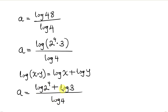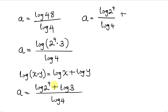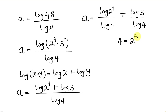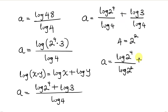Now our next step will be to split the fraction. So a becomes log 2 to the 4th divided by log 4, plus log 3 divided by log 4. Now we know that 4 is the same as 2 squared, so I'm going to write this as 2 squared. So a becomes log 2 to the 4th all over log 2 squared, plus log 3 all over log 2 squared.